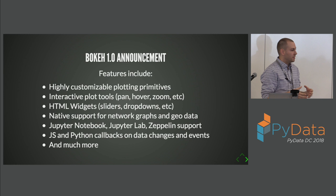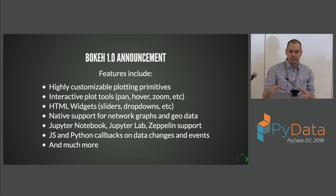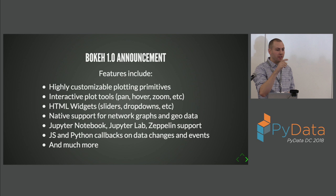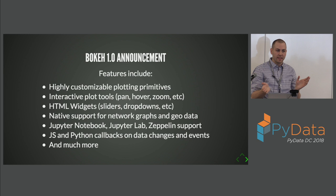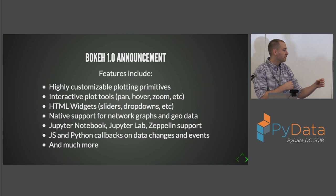Bokeh includes all the graphing primitives you need to make any kind of visualization — circles and lines you build up from base blocks. It also has interactive plot tools for dragging and highlighting elements, a set of HTML widgets like sliders and dropdowns, native support for specialized visualizations like graphs and GeoData including Google Maps and GeoJSON. We target a variety of backends including browsers, Jupyter Notebooks, JupyterLab, Zeppelin, and the Spark notebook.